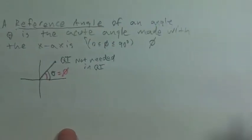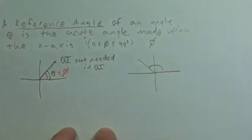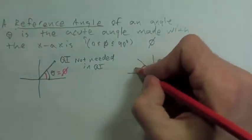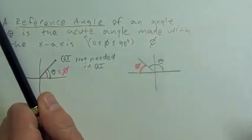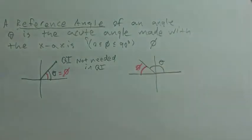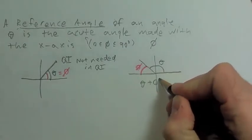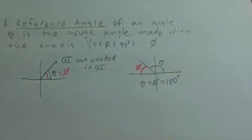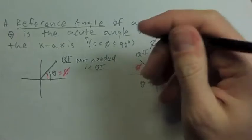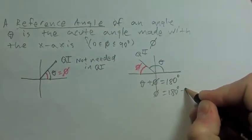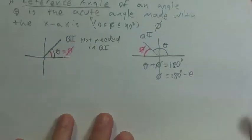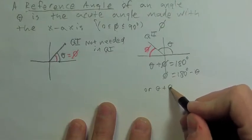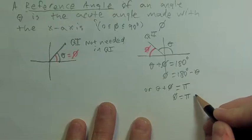In quadrant two, if this is our theta, our reference angle phi continues on to the x-axis. We find it as theta plus phi equals 180 degrees, so phi equals 180 minus theta. In radians, theta plus phi equals pi, so phi equals pi minus theta.